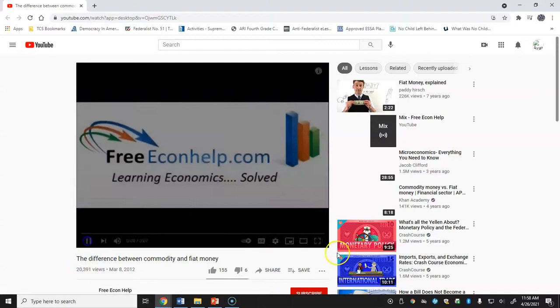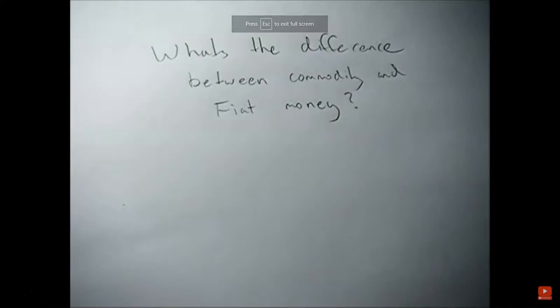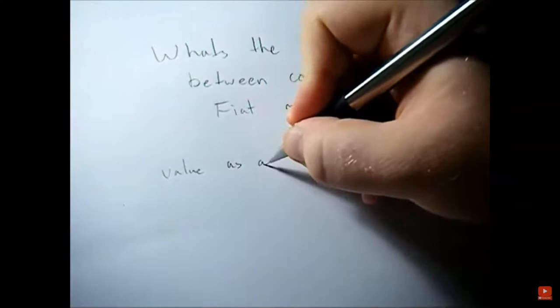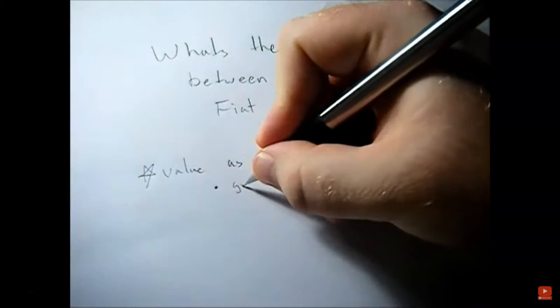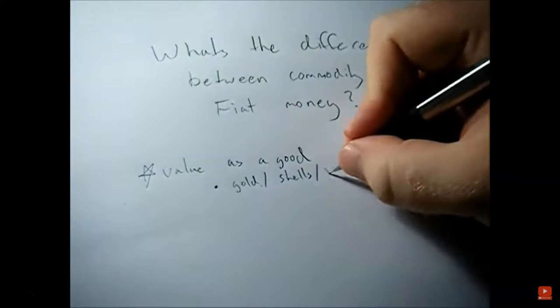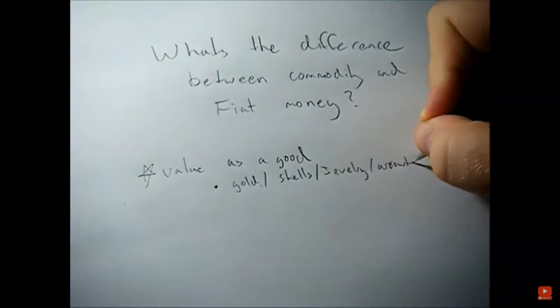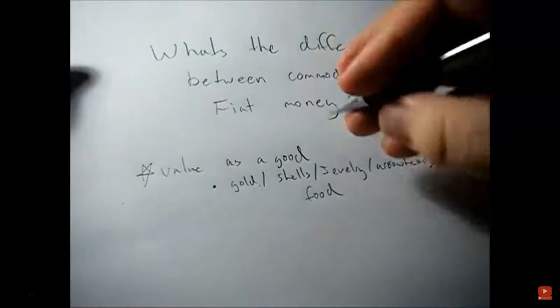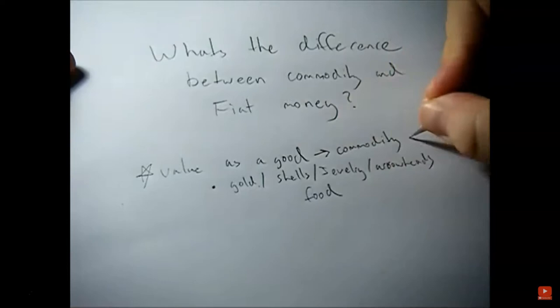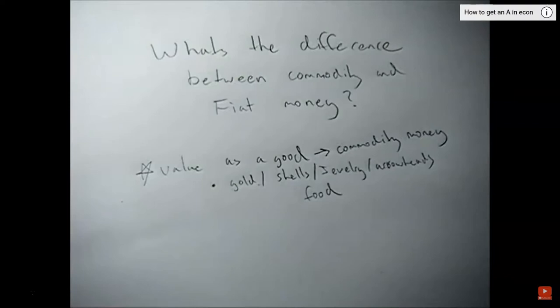Commodity money has value as a good in addition to its value as money — basically anything you could use for something other than money. Historical examples include gold, shells, jewelry, arrowheads, and food items like beans, as long as they don't spoil too quickly. If we stopped using commodity money as money, it would still have value as a commodity.